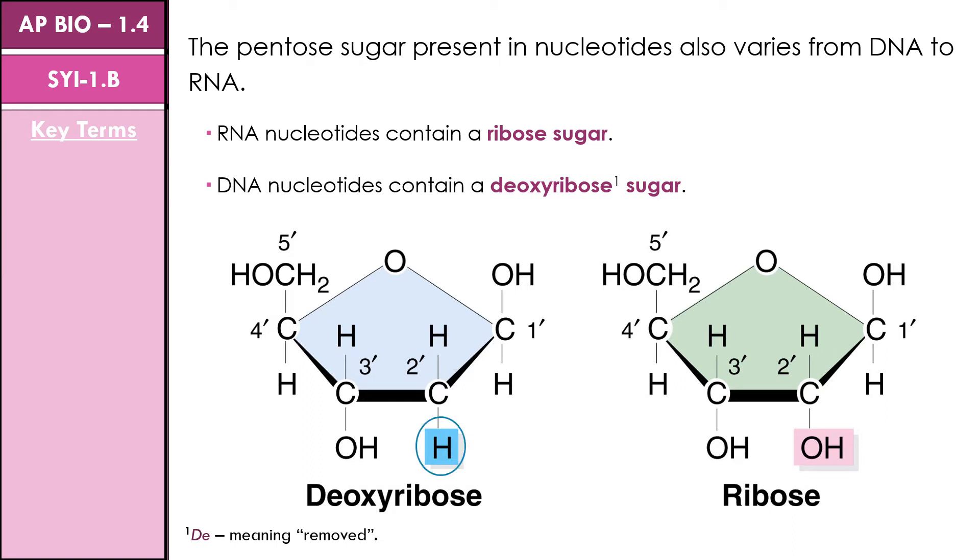The lack of hydroxyl group at the second prime position of the deoxyribose sugar in DNA makes the DNA structure less flexible than that of RNA. DNA, as we will discuss later, is composed of two polynucleotide strands, whereas RNA is typically single-stranded.